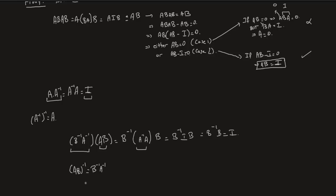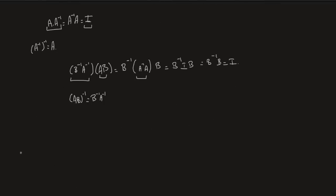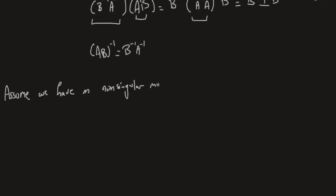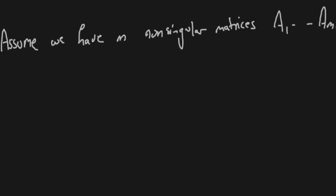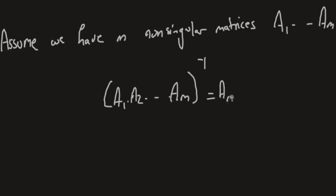We can generalize this to a product of M non-singular matrices A1 through AM. The inverse of A1·A2·...·AM is AM⁻¹ · AM₋₁⁻¹ · ... · A2⁻¹ · A1⁻¹. So we flip the order, then multiply. The inverse of a product equals the product of the inverses in reverse order. We're not going to show how to compute the inverse in this lecture — that's for future lectures. Keep in mind it is computationally expensive; computing an inverse on a computer requires a lot of computations.